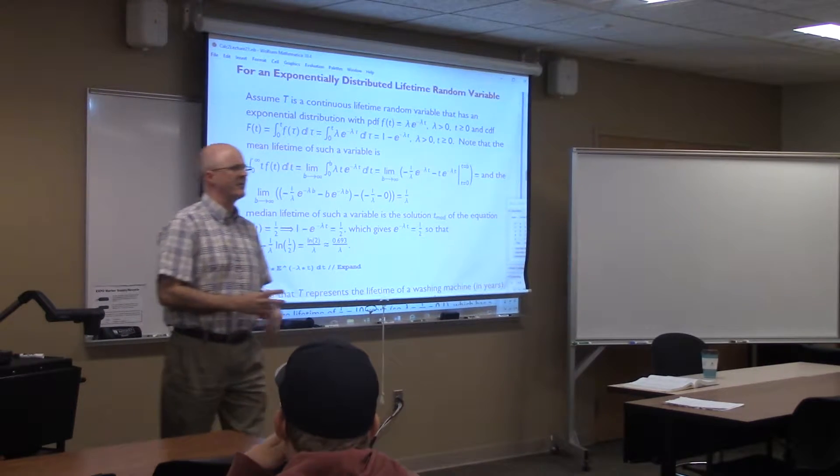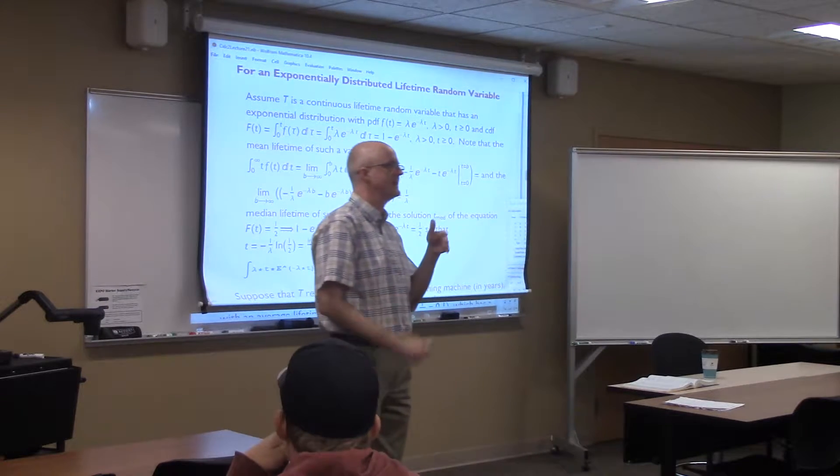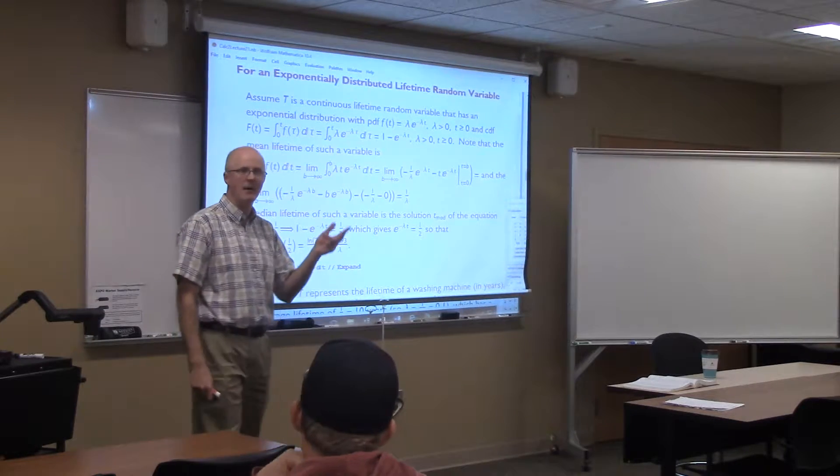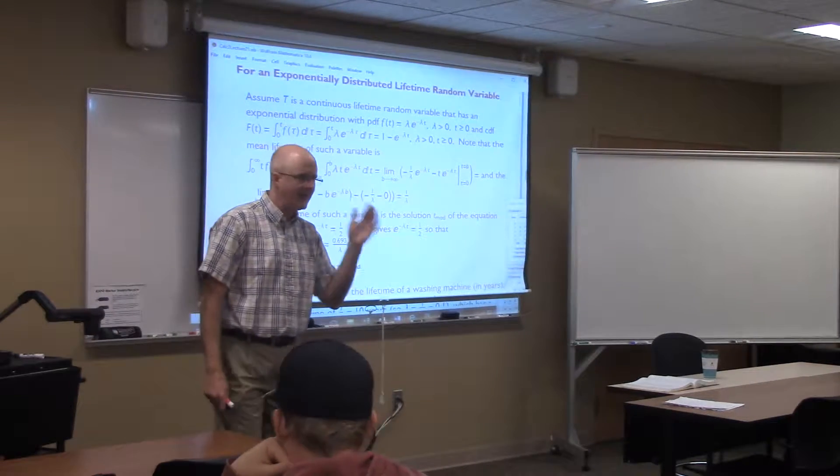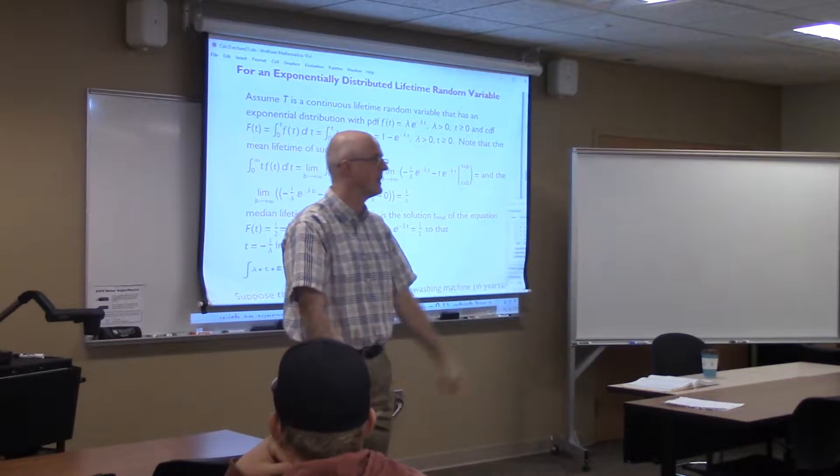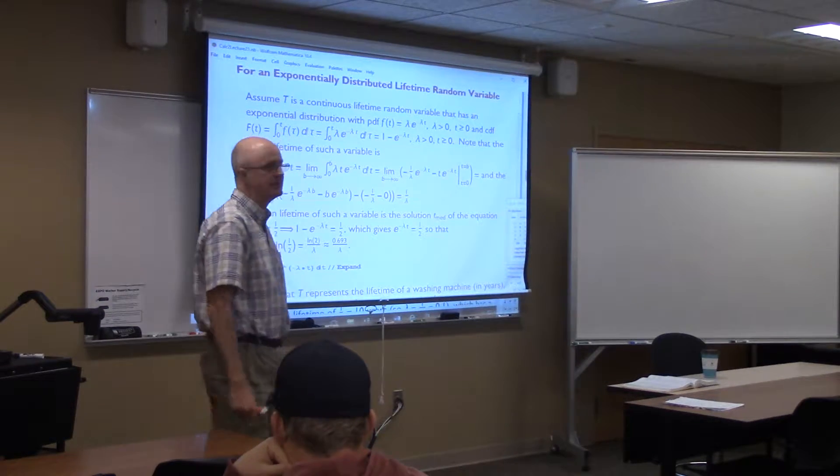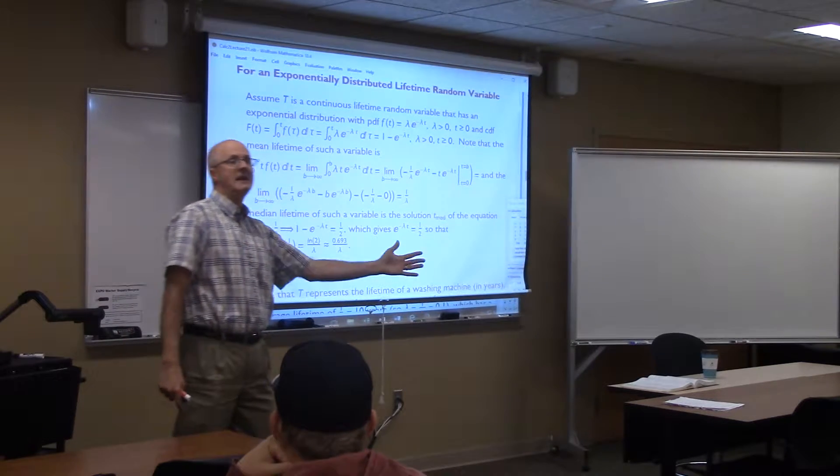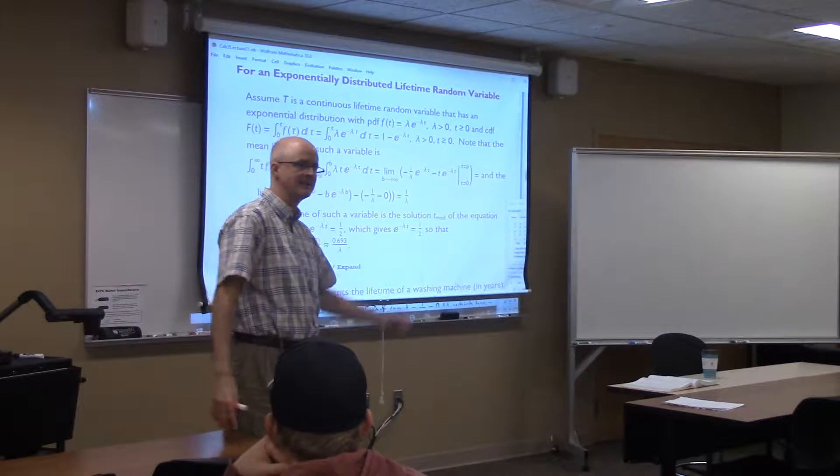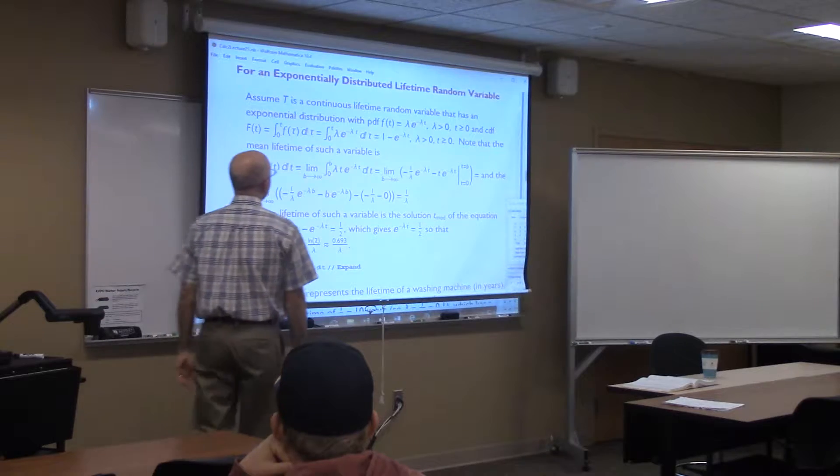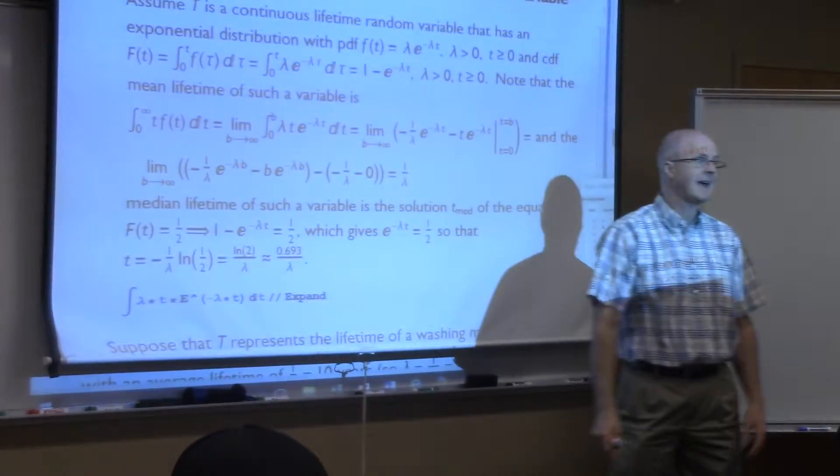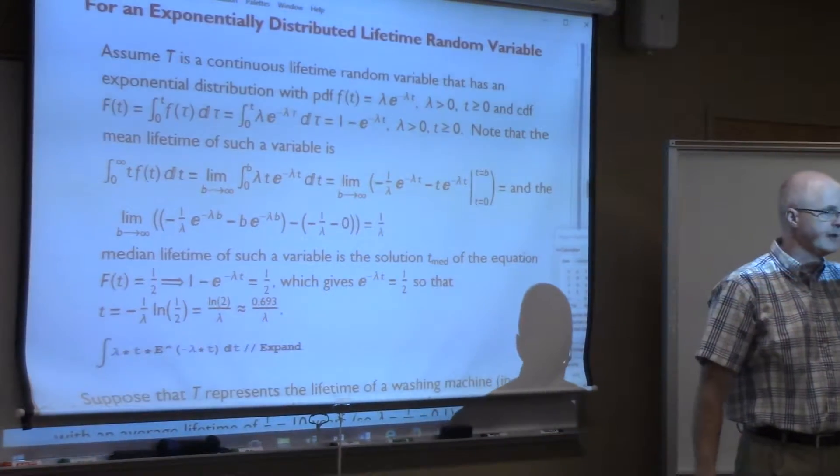So we've got two random variables going on. We've got capital T, which represents the lifetime of our washing machine. In the symbolism that I used in the other problem, there was this omega that was the drop-dead date. The washing machine had to die by age 20, according to those models, and according to your model on your homework. But according to the exponential distribution, the washing machine could last an arbitrarily long amount of time, although it would be unlikely for it to last past a certain amount of time. The PDF in such a situation is an exponential decay function right there. Lambda times e to the negative lambda t. That's something where if you integrate it from 0 to infinity, you get 1.